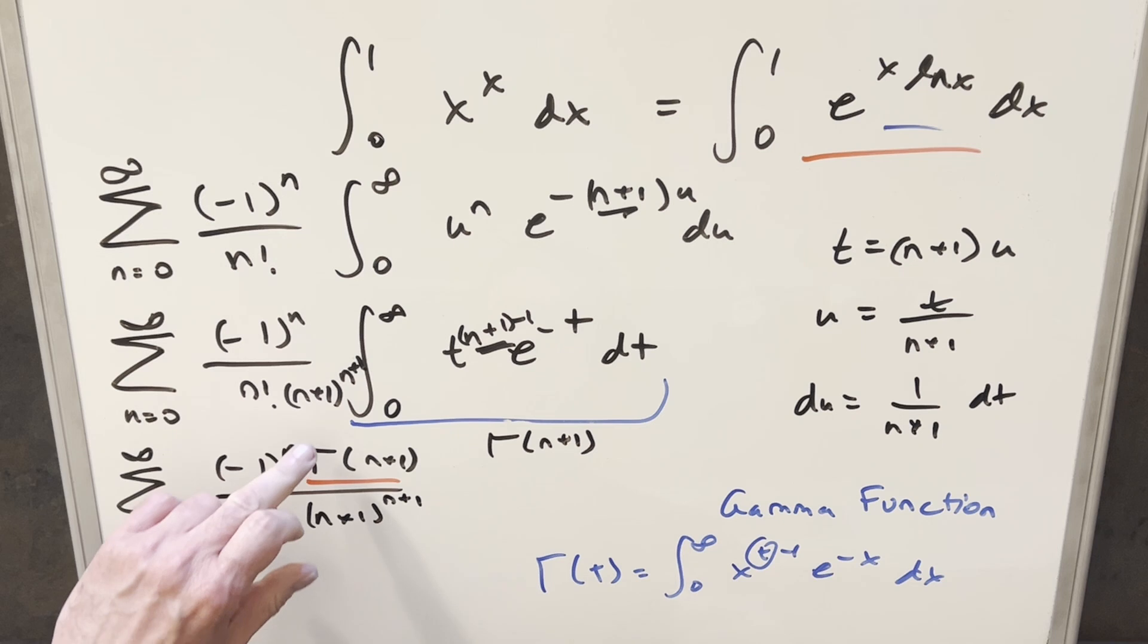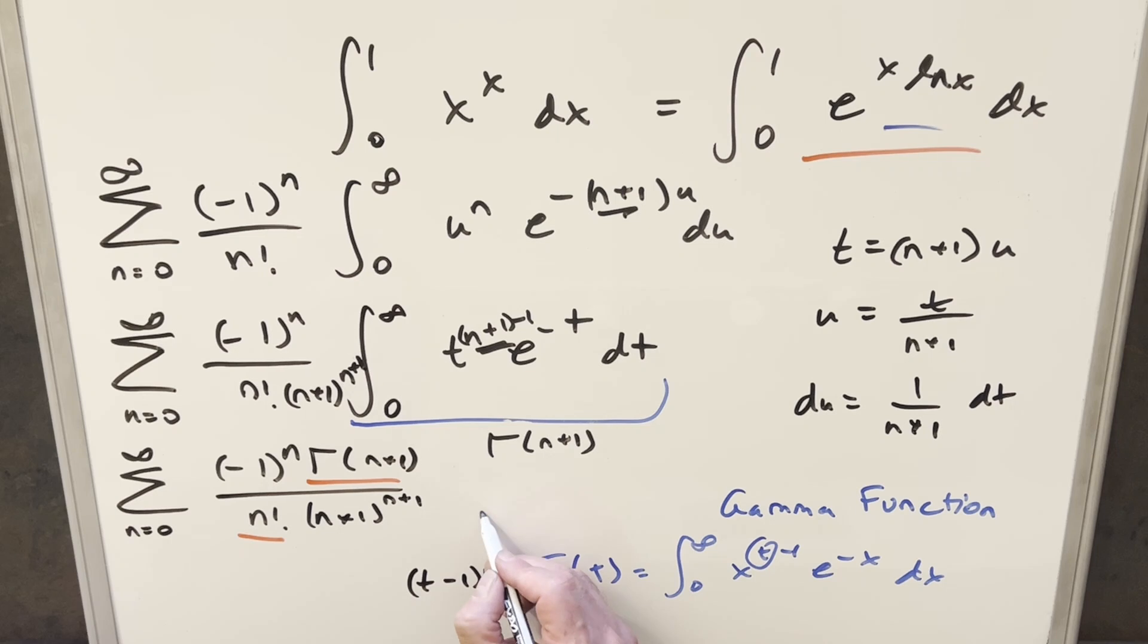But now what we can do here is the gamma function can be related to the factorial. We have a factorial here in the denominator. The way this is going to work, for gamma of t, this can be written as (t minus 1) factorial. But then if you have gamma of, let's say here, (t plus 1), this is going to be the same thing as t factorial. So this right here, this can be written as n factorial. But doing that, this is just going to cancel out with this. And then we've got our simplified expression.